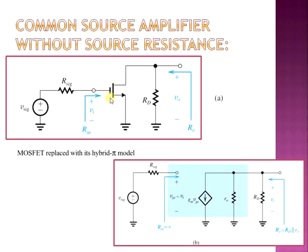Let us look into the common source amplifier without the source resistance. Consider the small signal model shown in figure A. This small signal model can be replaced by a hybrid equivalent model shown in figure B. We have replaced the MOSFET with an equivalent hybrid pi model, wherein we have represented the input VI and the dependent current GM×VGS connected in parallel with R0.